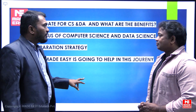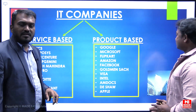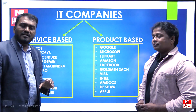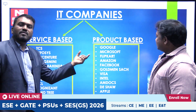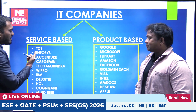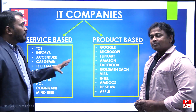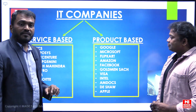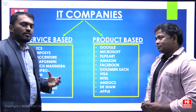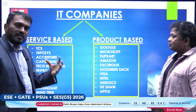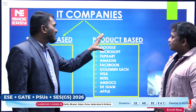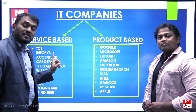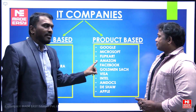First, why GATE for computer science? Generally, companies are broadly categorized into two types: service-based companies and product-based companies. Service-based companies include TCS, Infosys, and Accenture. Product-based companies include Google, Microsoft, Flipkart, Amazon, and Facebook. In normal colleges, if you get placed, you go into service-based companies. But after GATE, if you do MTech in IITs or top NITs, you will be placed in product-based companies.